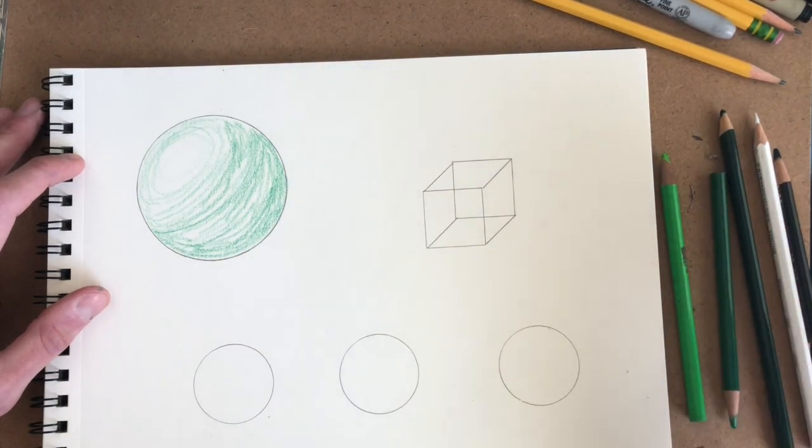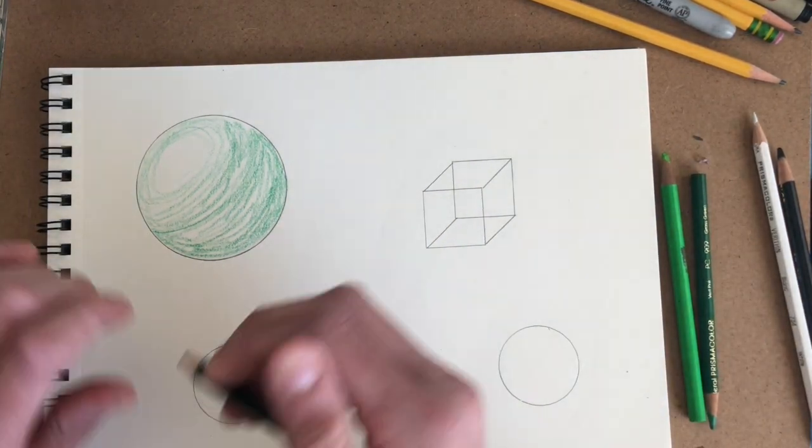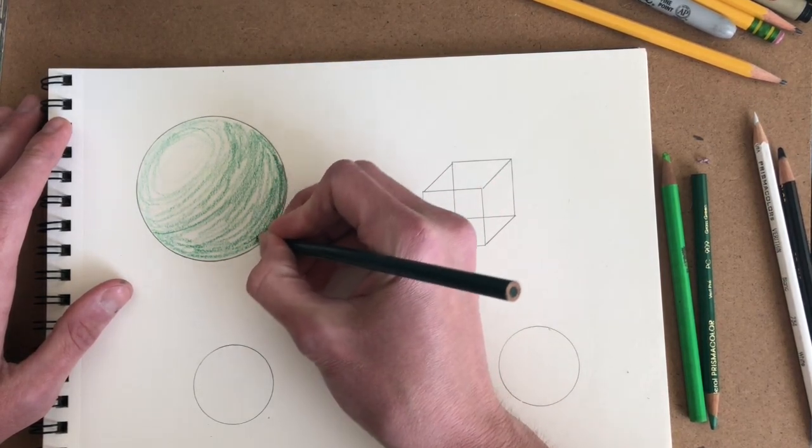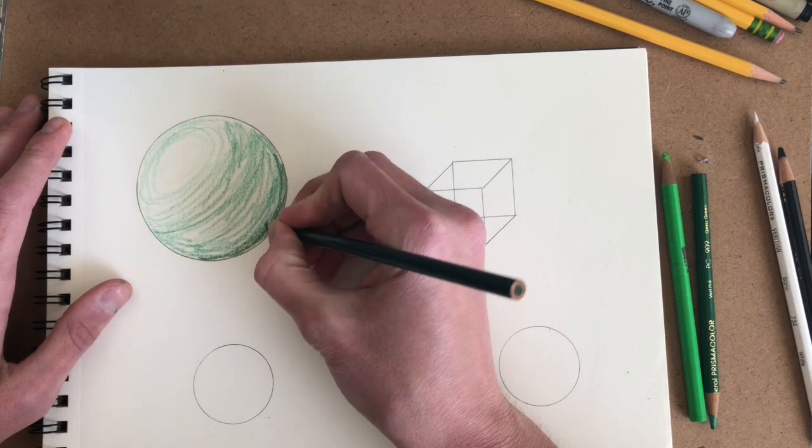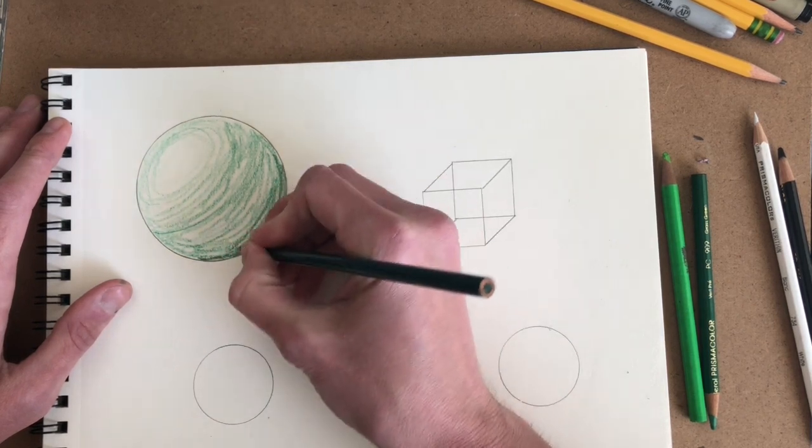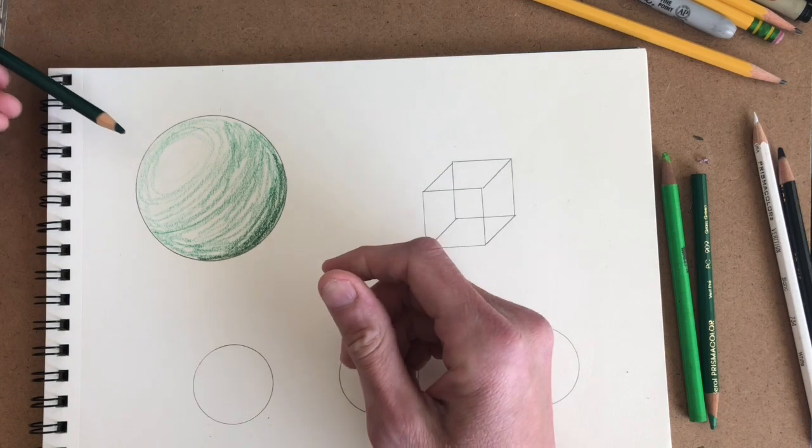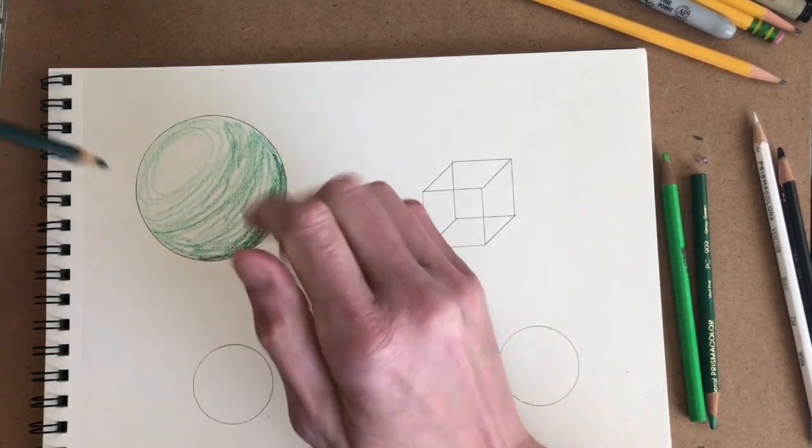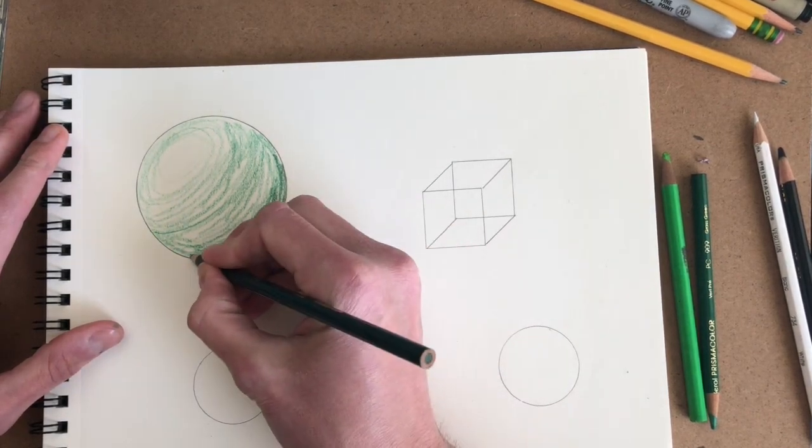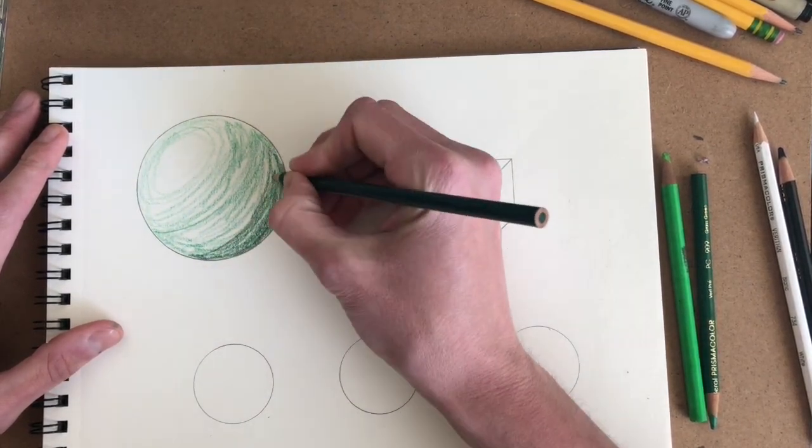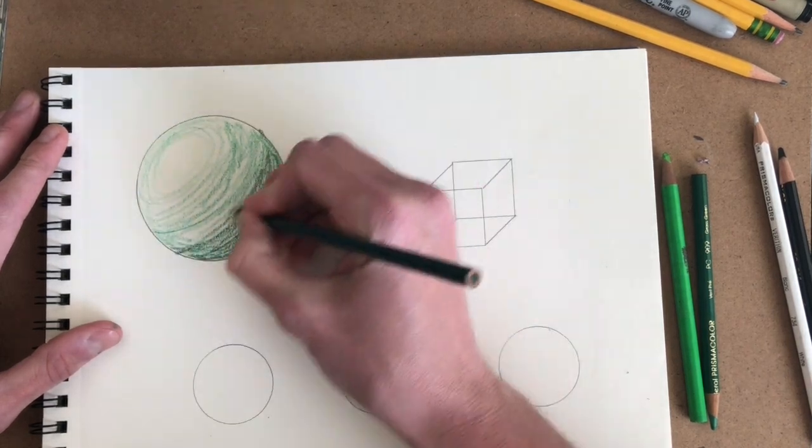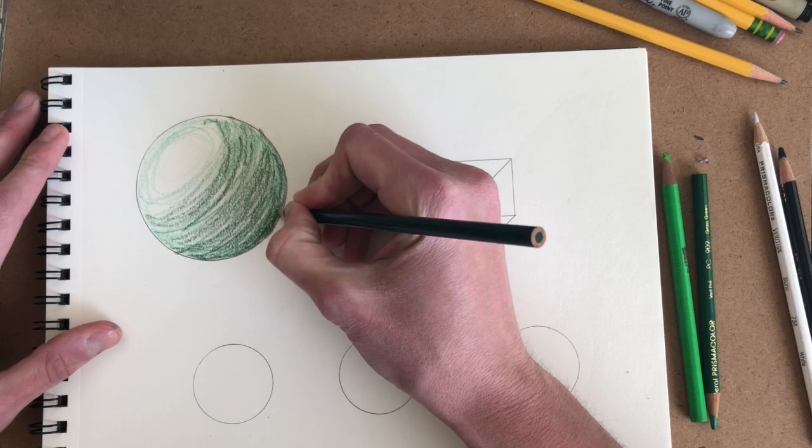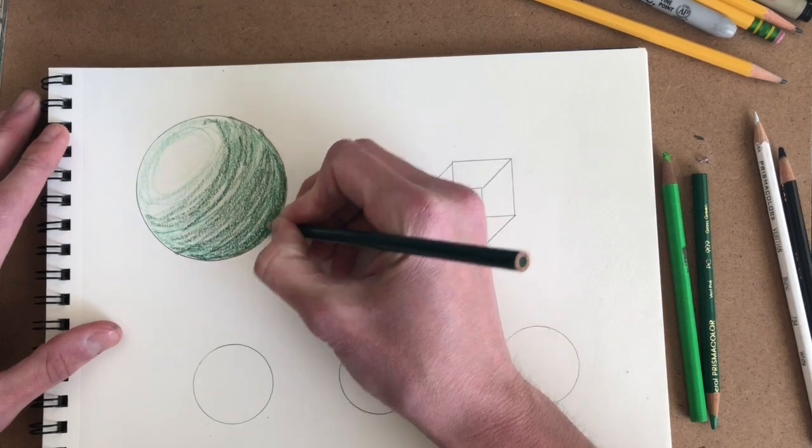And then as I get to the lighter area, letting some space in and then leaving that area untouched to preserve it and keep it lighter. And then I'll take my darker green and I'll start shading in where I know the darkest area of my sphere will be. I'm imagining my light source coming from this direction, so it's shining and creating the lightest area here and the darkest area back here.